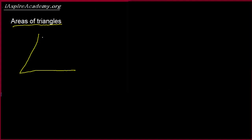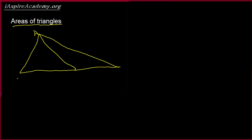We have a triangle like this. Let me draw it. My drawing skills are not what they should be for this, but I hope you forgive me for that. And so we have a triangle like this. And we have two triangles with points A, B, C, D. Let's say this side is 12, and this is a perpendicular of length 5.